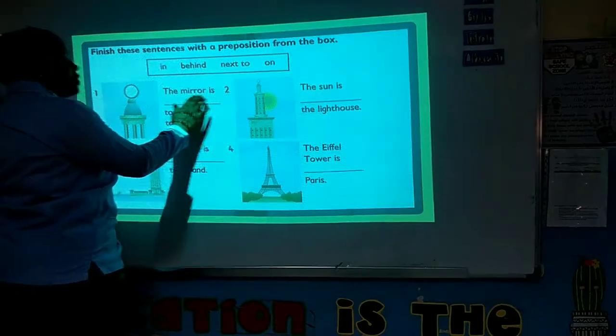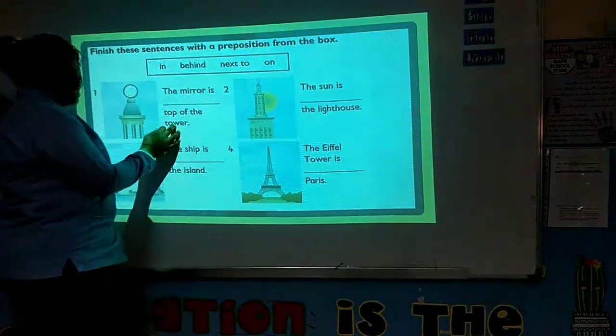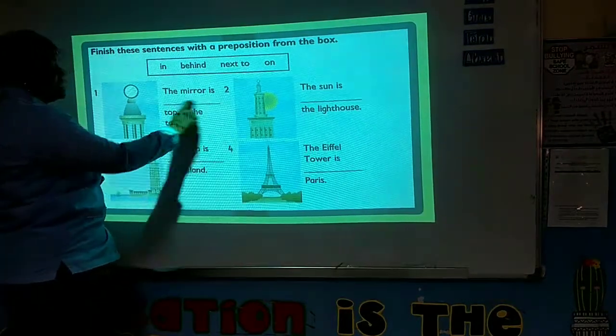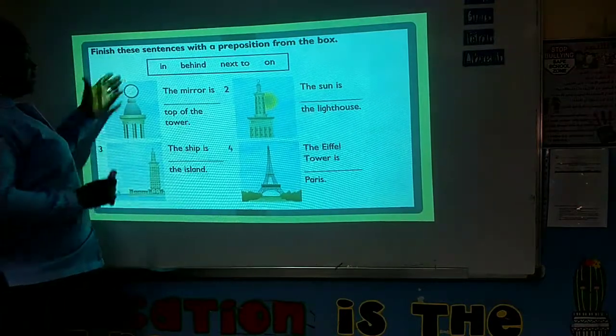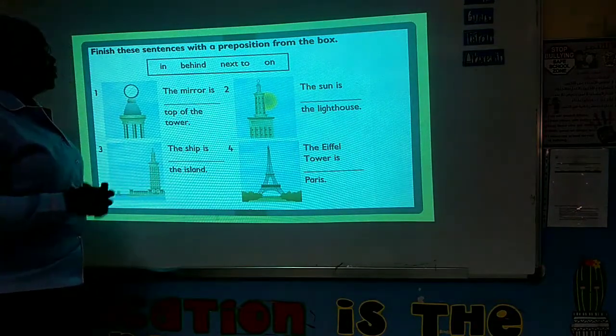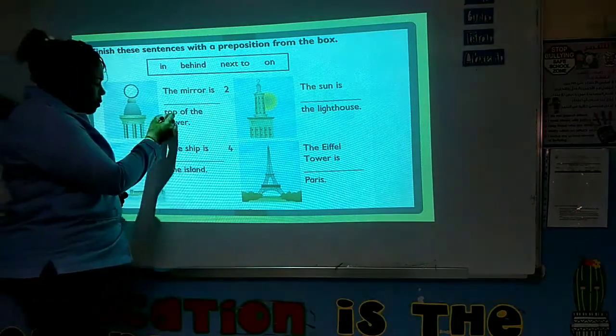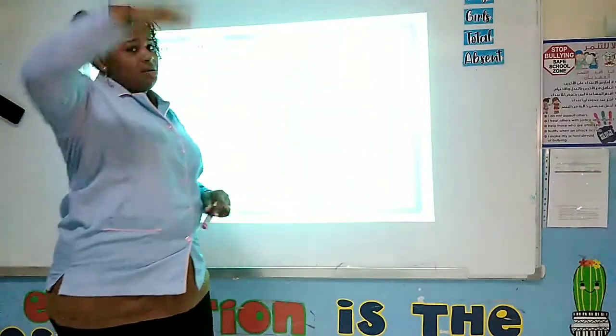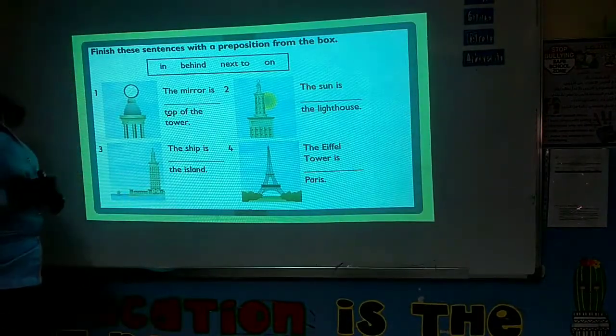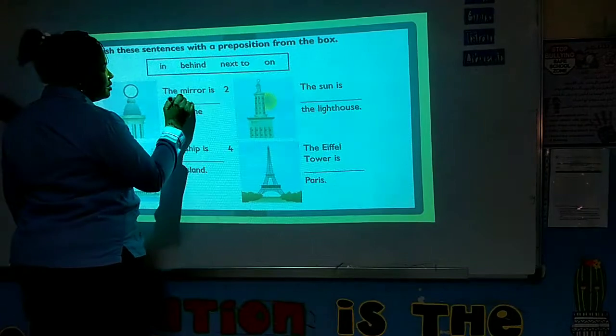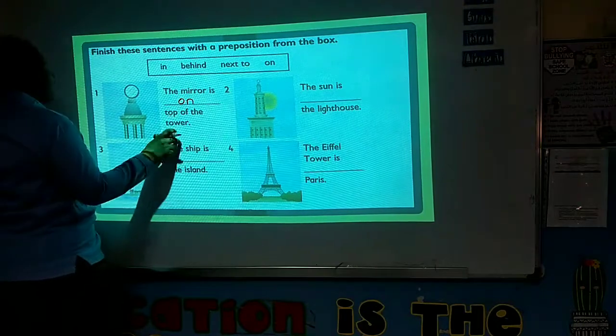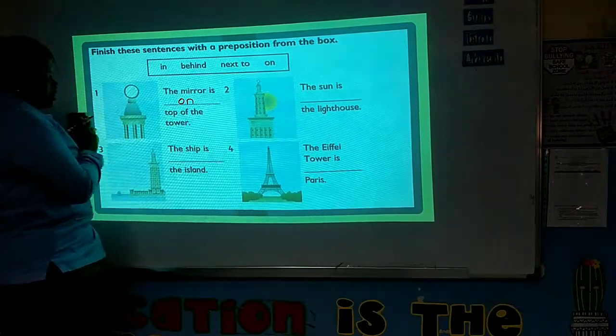Here we are saying, the mirror is blank top of the tower. Where is the mirror? Look at it here. Look at the tower. They said the mirror is blank top of the tower. Now, a clue to tell you where it is, is this top. What is top? It means on top. So if it is on top, what would be the best preposition here? The mirror is on the tower. So that is the correct preposition to use.